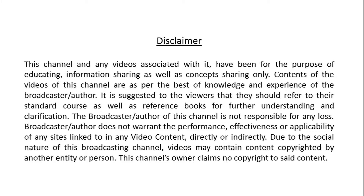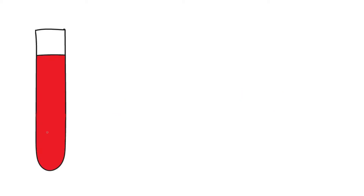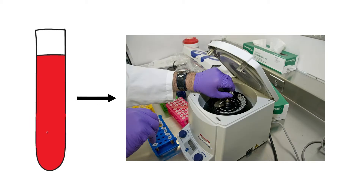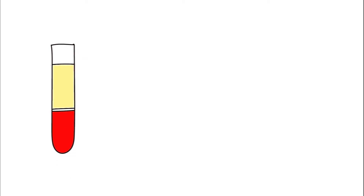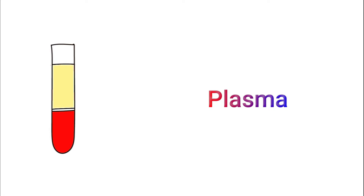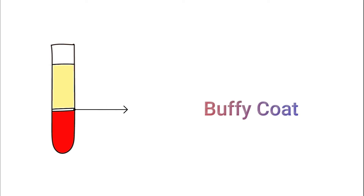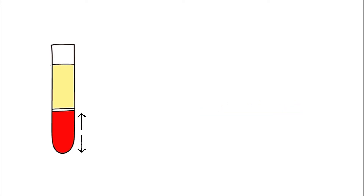Hello friends, welcome to our channel Forensics For You. Today we are going to discuss about blood and its composition. To find out about the components of blood, we take blood in a test tube and centrifuge it for a fixed period of time. We then see three partitions: the first layer is plasma, which has the lowest density and is also known as the supernatant. The middle layer is known as the buffy coat, containing WBCs and platelets. The bottom-most layer is RBCs, the most dense component of blood.